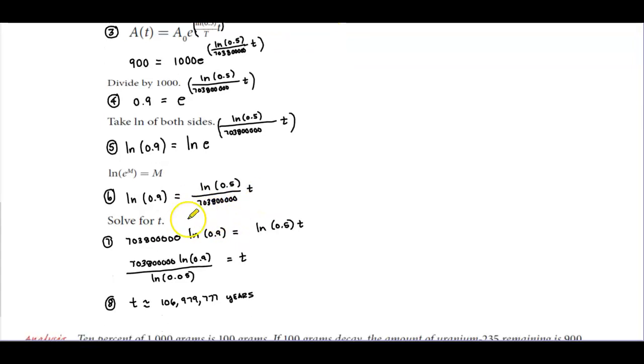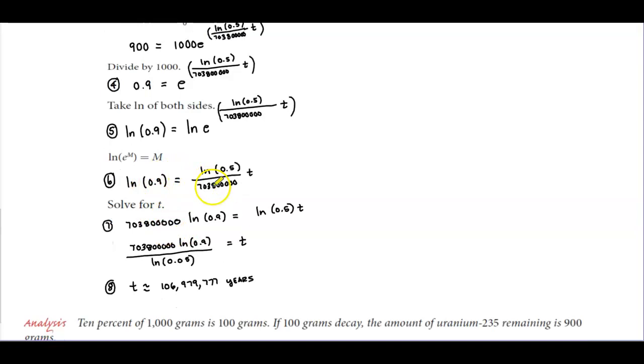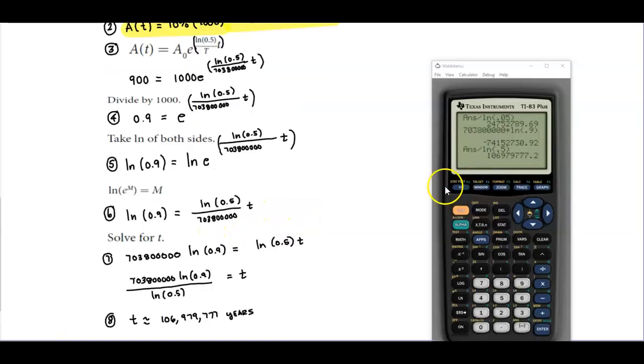And then we're going to solve for t. So we're going to multiply both sides by the denominator. So we have 703,800,000 times the natural log of 0.9, which is equal to the natural log of 0.5 t. And so then we're going to divide both sides by the natural log of 0.5.